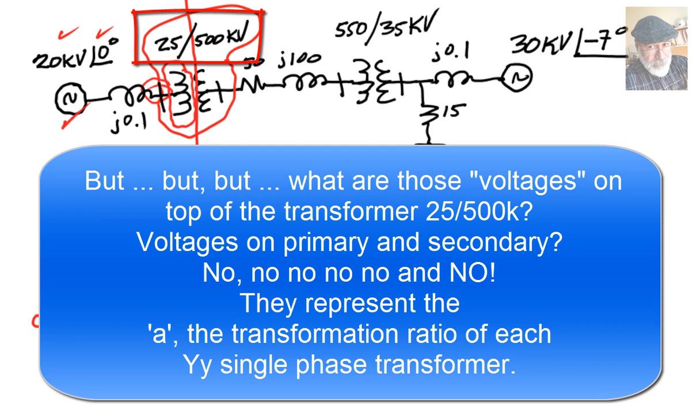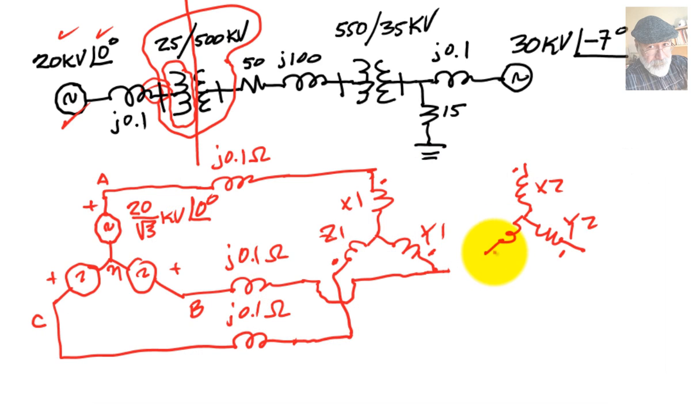But what are those voltages on top of the transformer? 25 kV, 500 kV? Are those the voltages on the primary and the secondary? No, absolutely not. They represent the A, the transformation ratio of each one of the YY single-phase transformer. So each one of those units has a ratio of 500 divided by 25, which is 20. A is 20, with the high side on the right-hand side. So you write on each one of the single-phase transformers, 1 to 20. We connect them in a Y, and we have, so far, drawn all the circuit up to this point.